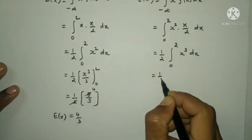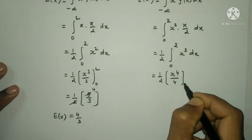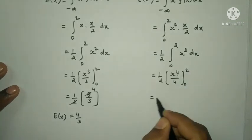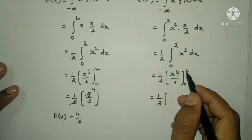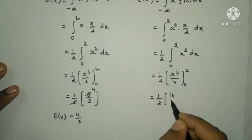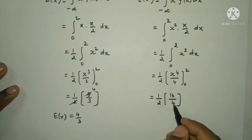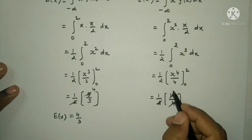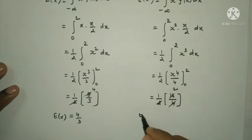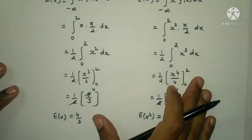So (1/2) · [x⁴/4] from 0 to 2. Upper limit: 2⁴ = 16, so 16/4 = 4. Lower limit gives 0. Then (1/2)·4 = 2. Therefore E(x²) = 2. We have E(x) = 4/3 and E(x²) = 2.